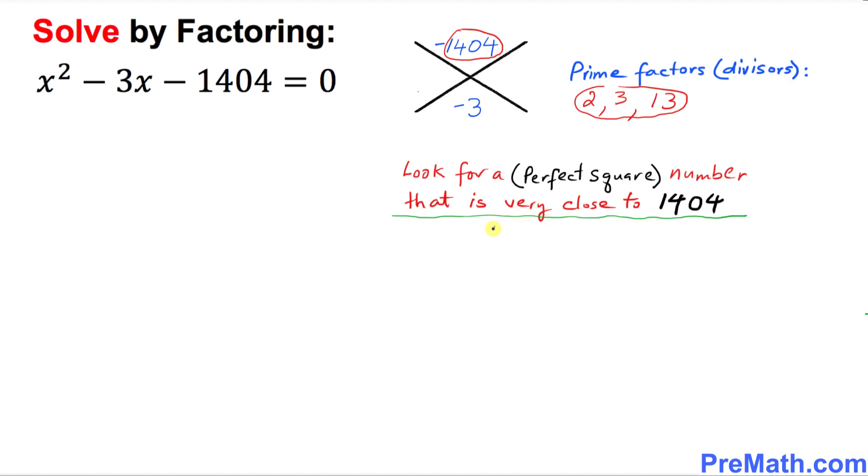Let's look for a perfect square number that is very close to 1404. Obviously, that number is 1600, which is pretty close and is a perfect square that could be written as 40 times 40. Thus, our possible factors of 1404 are going to be really close to these numbers.